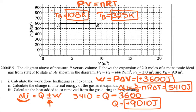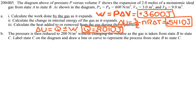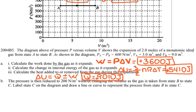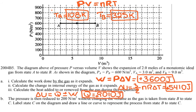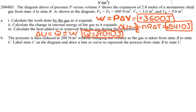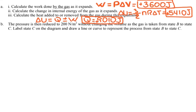For the next part, the pressure is reduced to 200 Pascals without changing the volume as the gas moves from state B to state C. We need to label state C on the diagram and draw a line to represent this process. Since volume stays the same but pressure drops from 600 to 200, we draw a vertical line downward from B to C on the P-V diagram.